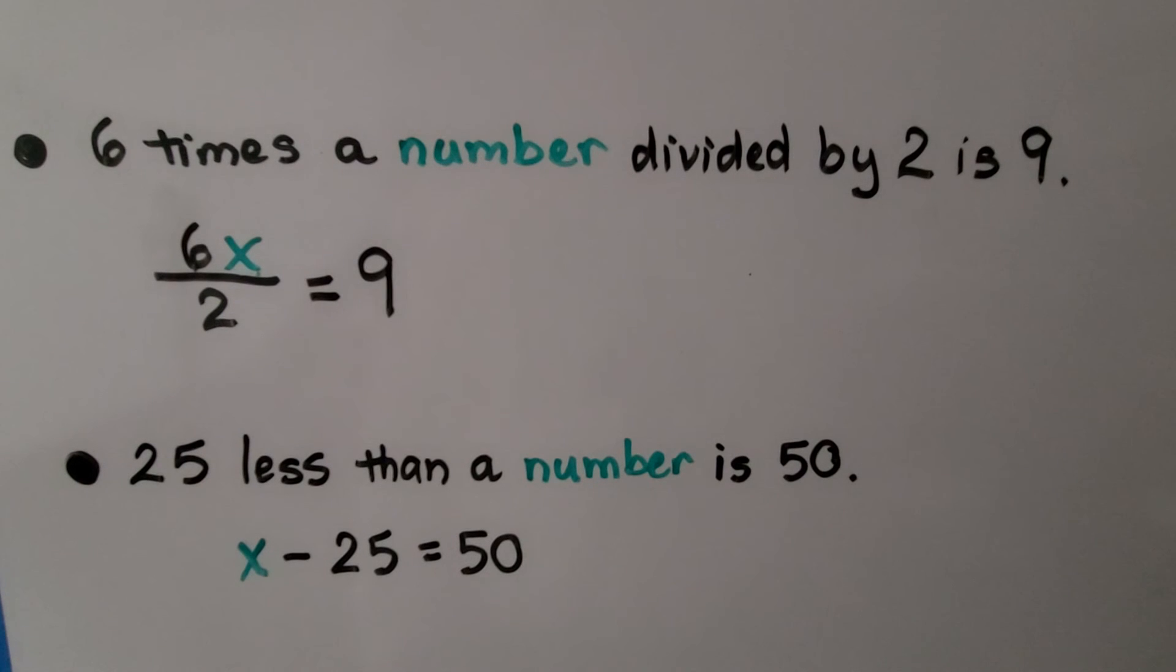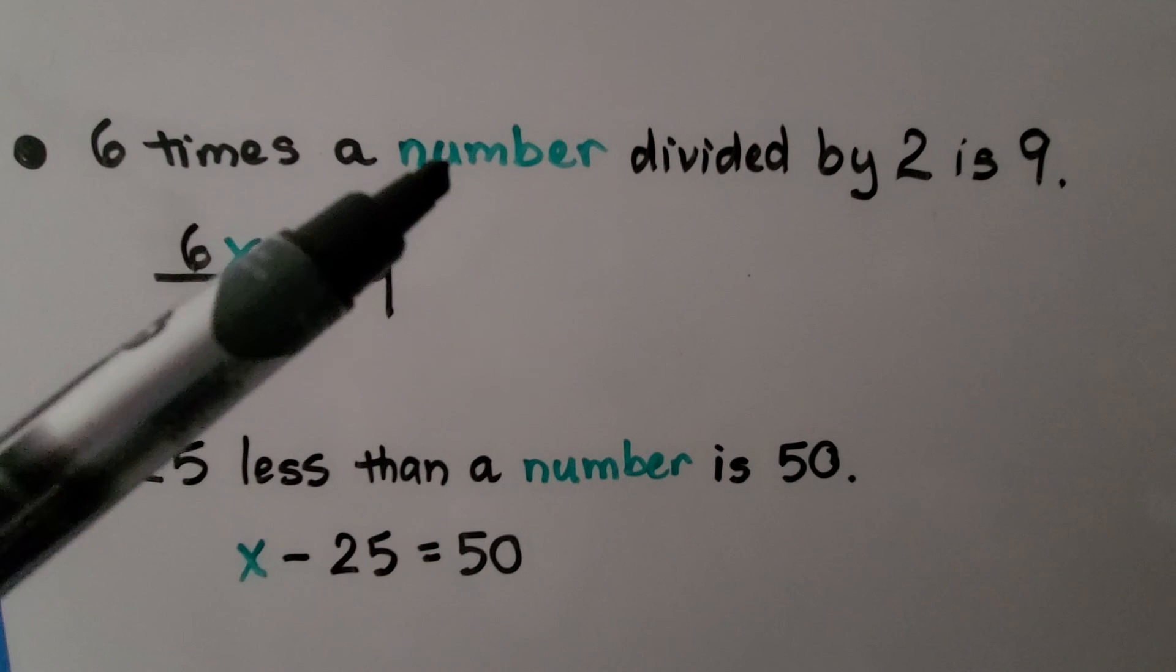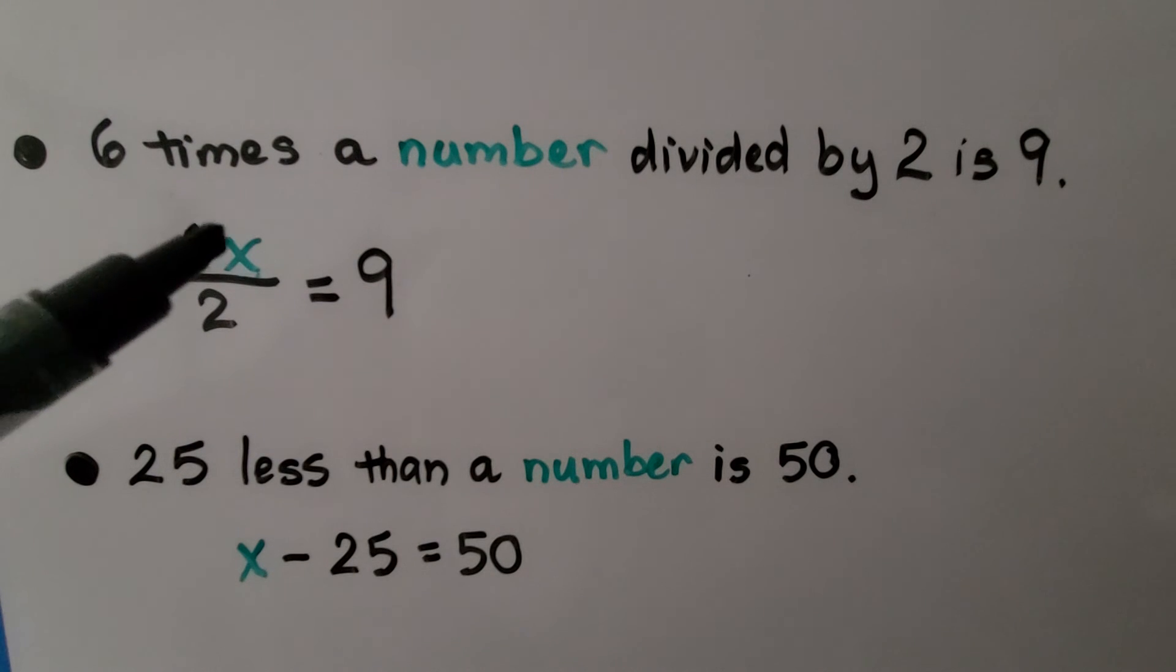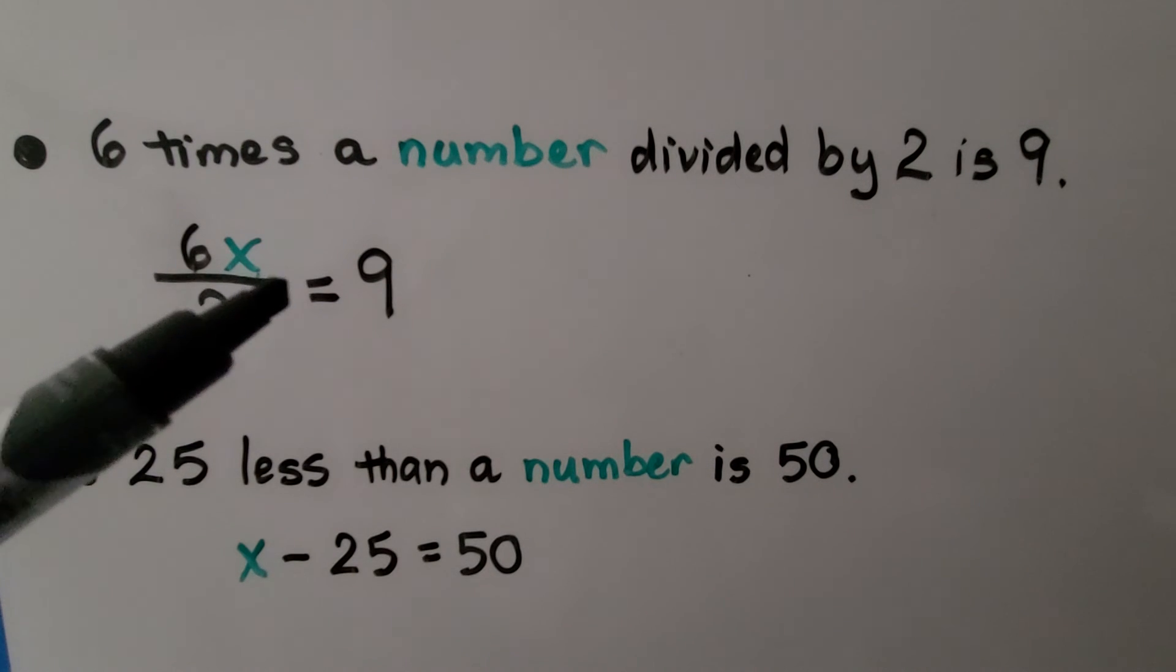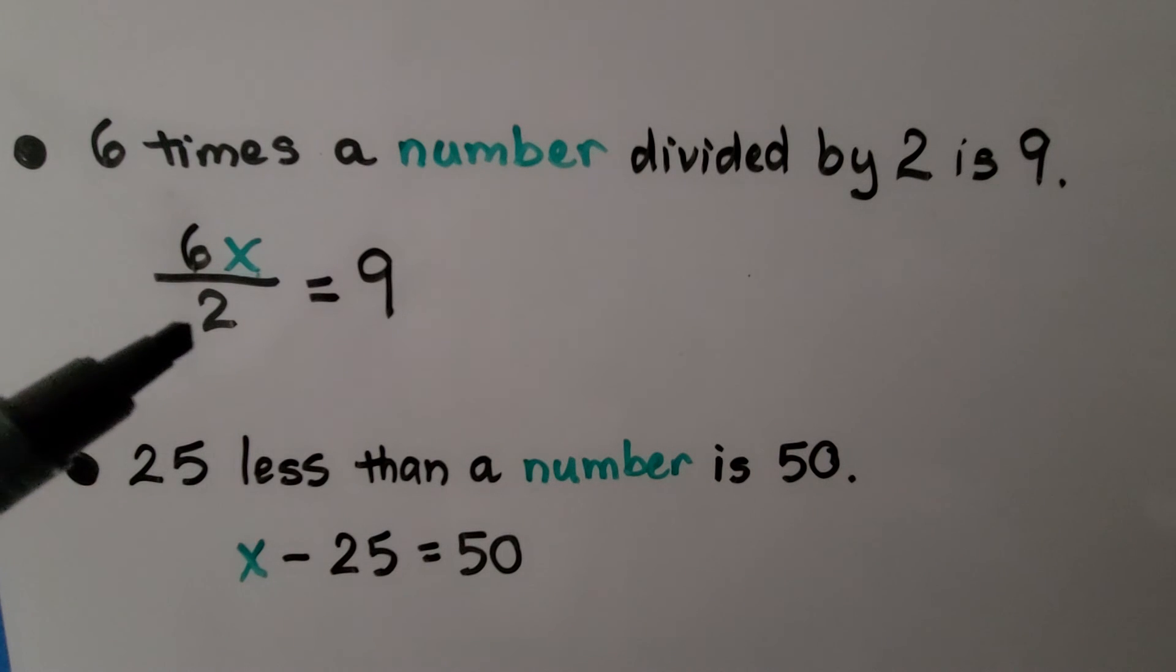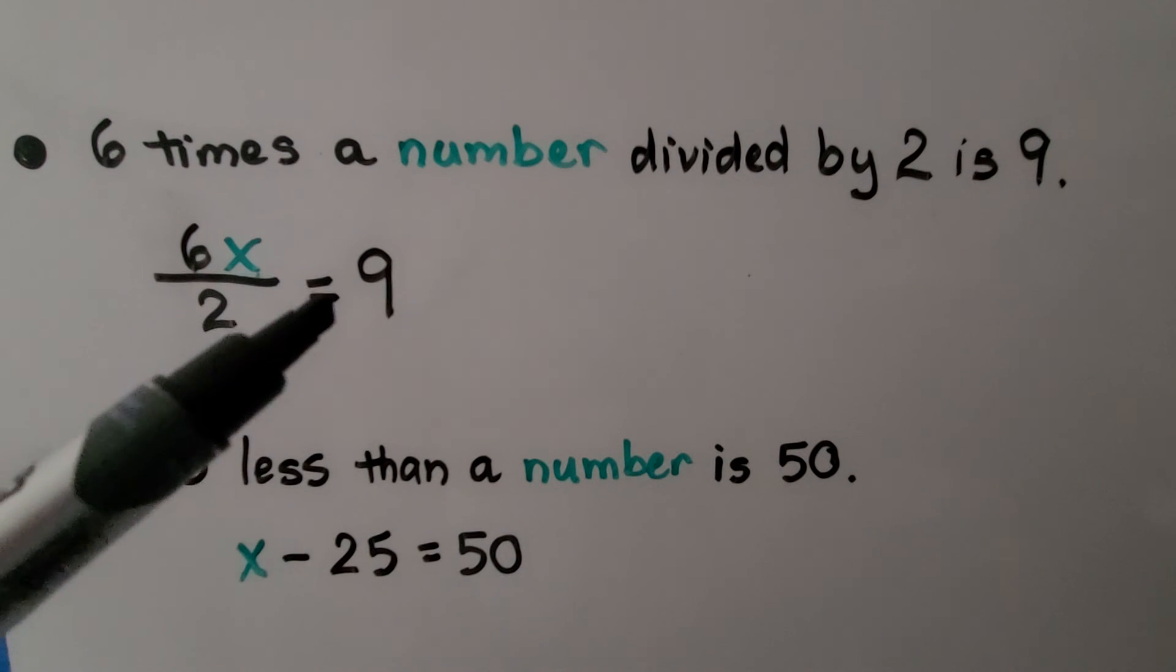6 times a number divided by 2 is 9. 6 times some unknown number, we could use 6x. And if it's divided by 2, we can draw a fraction bar with a 2 as the denominator, and it's equal to 9.